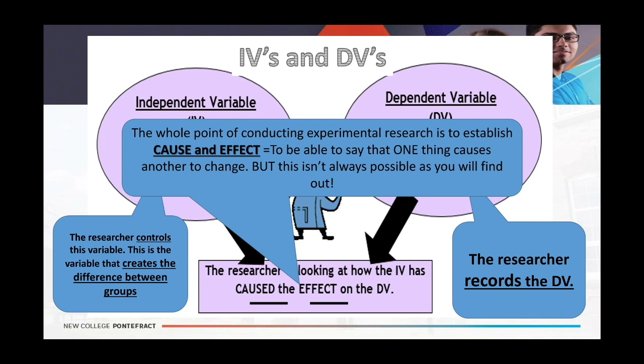In experimental research it's not always possible to establish cause and effect because we have a third kind of variable which is really difficult to control. Fundamentally, in an experiment you are manipulating an independent variable to create two different groups of participants and measuring the effect on the dependent variable. If the IV causes the DV to change, you have a cause and effect relationship. If it doesn't result in any change, the IV is not having any effect at all. You may want to pause now and make sure you have good notes on IVs and DVs before moving forward.